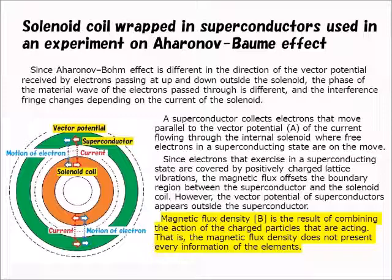The superconductor collects electrons that move parallel to the vector potential of the current flowing through the internal solenoid, where free electrons in a superconducting state are in motion. Since electrons in a superconducting state are covered by positively charged lattice vibrations, the magnetic flux offsets the boundary region between the superconductor and the solenoid coil. However, the vector potential of the superconductor appears outside the superconductor.